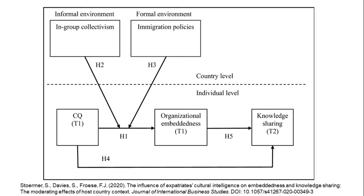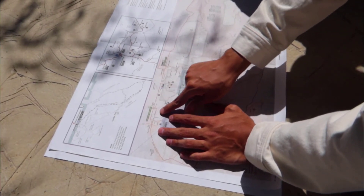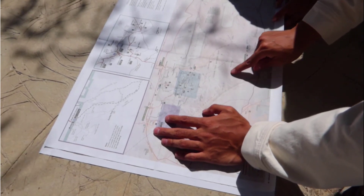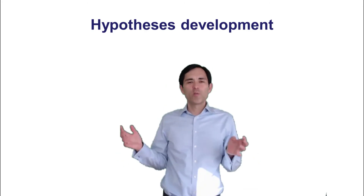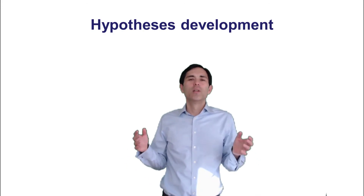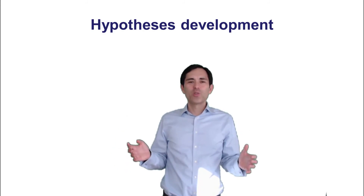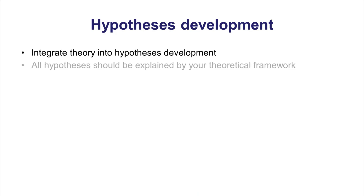I would recommend you also print such a framework in your paper, and typically I would recommend doing it upfront, because such a framework can also be used as a roadmap that helps the reader understand in which direction you're going and what kind of hypotheses you're developing later. So in a deductive paper, you would start with a literature review, then provide an overview of your theoretical framework, and then develop more specifically each of your hypotheses. You would like to integrate your theory into the hypothesis development.